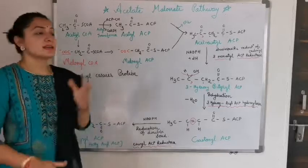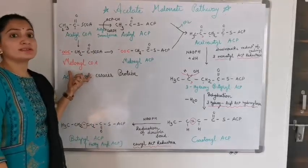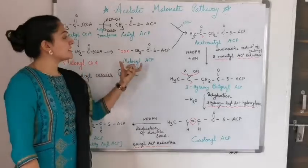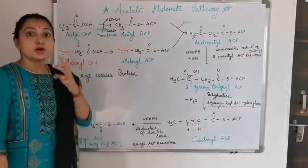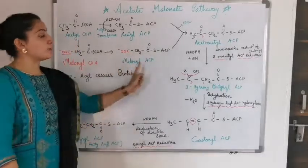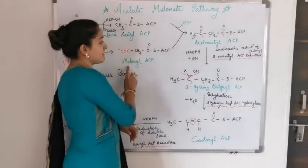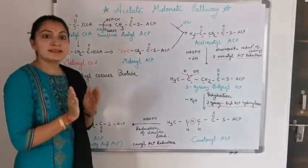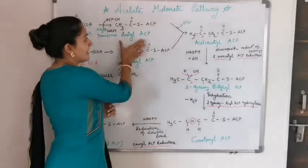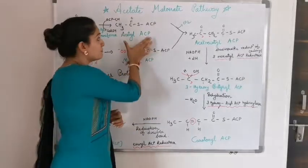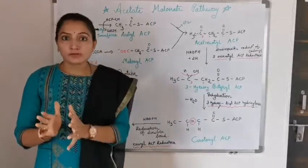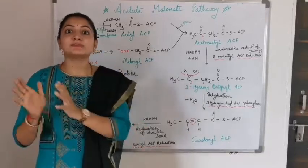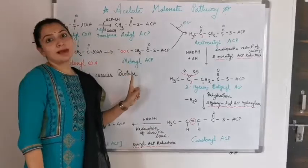Malonyl coenzyme A is formed from acetyl coenzyme A, and in the presence of transferase enzyme, it is converted into malonyl ACP. So two ACPs are formed: acetyl ACP and malonyl ACP. The difference between these two groups is a C=O (carbonyl) group; the remaining structure is the same. Both acetyl ACP and malonyl ACP are the main precursors for the acetate-malonate pathway.